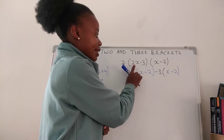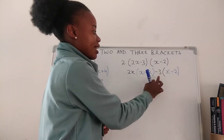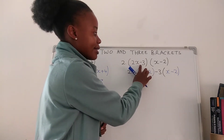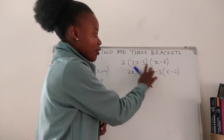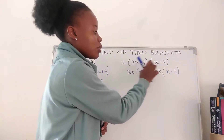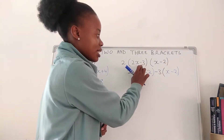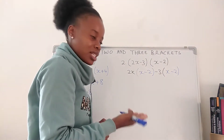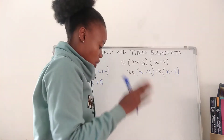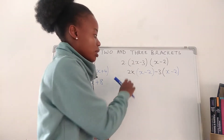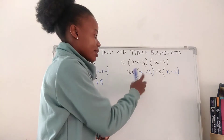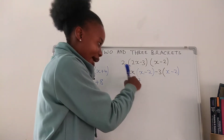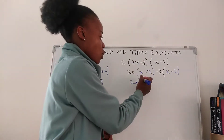We have multiplied the first term with everything on this side and the second term with everything on this side. Make sure that you write the term with each side — if it's positive 3, write positive 3; if it's negative 3, you write negative 3. You don't just write 3 without a sign in front of it. After this we're going to remove brackets: 2x times x gives us 2x squared, 2x times negative 2 gives us negative 4x.